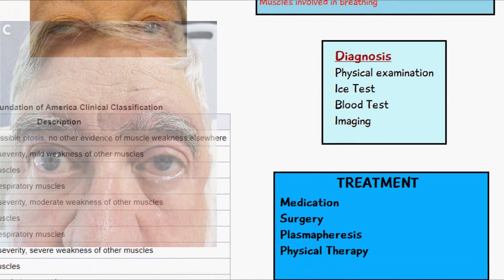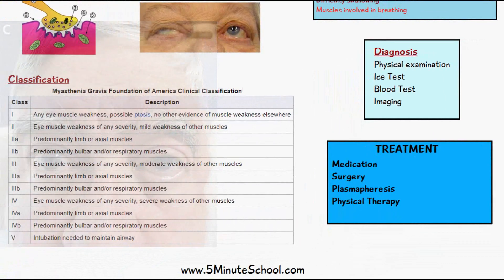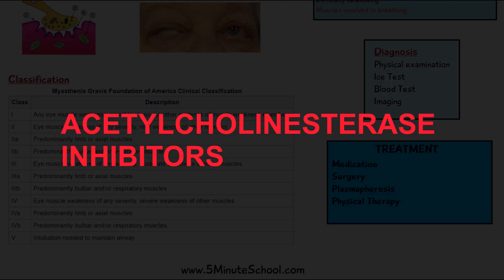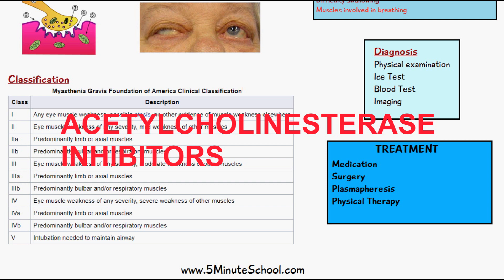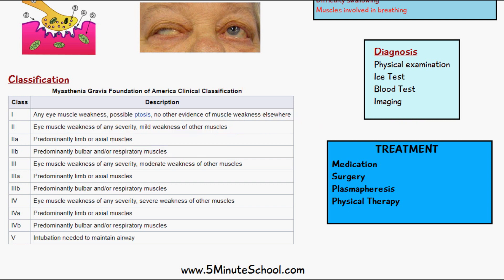Some medications can be given as treatment, including acetylcholine esterase inhibitors, which inhibit the function of acetylcholine esterase so the acetylcholine neurotransmitter is not broken down as frequently. This helps maintain the transmission of the impulse from the nerve to the muscle.